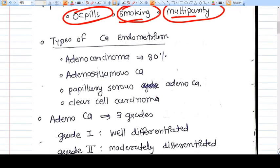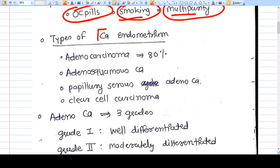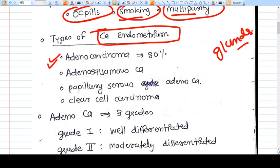Now there are types of CA endometrium. The most common is adenocarcinoma. When we say adenocarcinoma, that means the carcinoma is developed in the glands. So in endometrium, we are concerned about the glands. Adenocarcinoma is the most common, 80 percent.